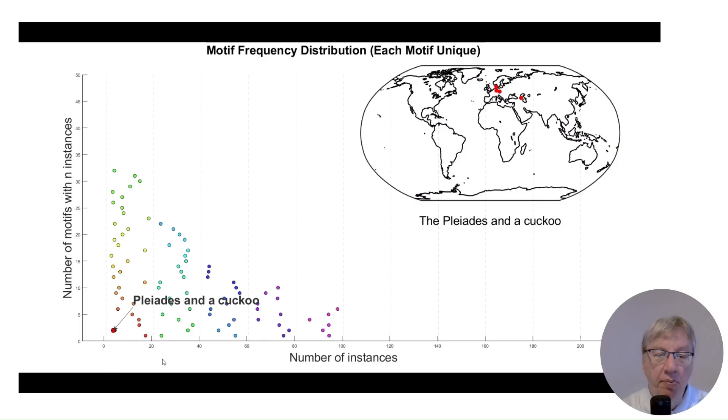For the motif of the Pleiades as person, one has for instance 164 motifs, which is quite a lot. So we see the curve and now let's examine the real data.